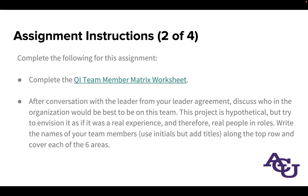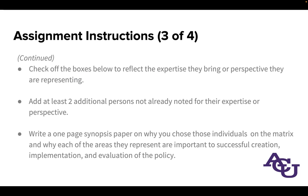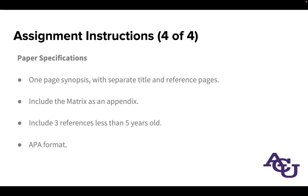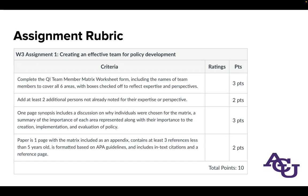The instructions say to use the names of team members and add titles along the top row to cover each of the six areas. Use initials rather than full names. Then check off boxes corresponding to their expertise, and add people not already listed for their expertise and perspective. In addition, write a one-page synopsis paper on why you chose those individuals and why each area they represent is important to successful creation, implementation, and evaluation of the policy. APA formatting is 20% of the grade.